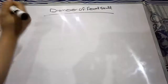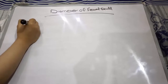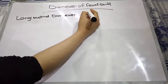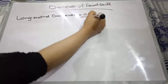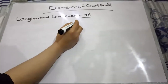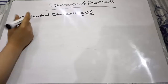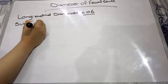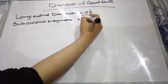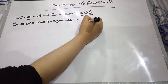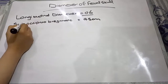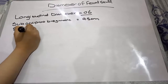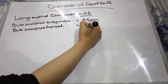Now we will discuss about the longitudinal diameters, which are basically six. We have the sub-occipital bregmatic diameter, which is 9.5 centimeters. We have the sub-occipital frontal diameter, which is 10 centimeters. We have the occipital frontal diameter, which is 11.5 centimeters.